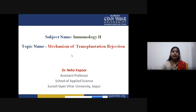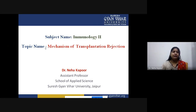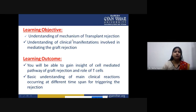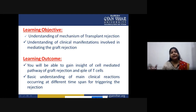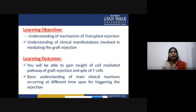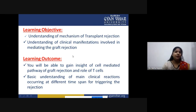Good morning students. Today we will be talking about the mechanisms of transplant rejection — how a particular graft gets rejected when a transplant is done. The main learning objectives of this lecture are to understand the mechanism of transplant rejection, the clinical manifestations involved in mediating graft rejection, and the various clinical reaction types: hyperacute, acute, or chronic, depending on the time span they take to reject a graft.